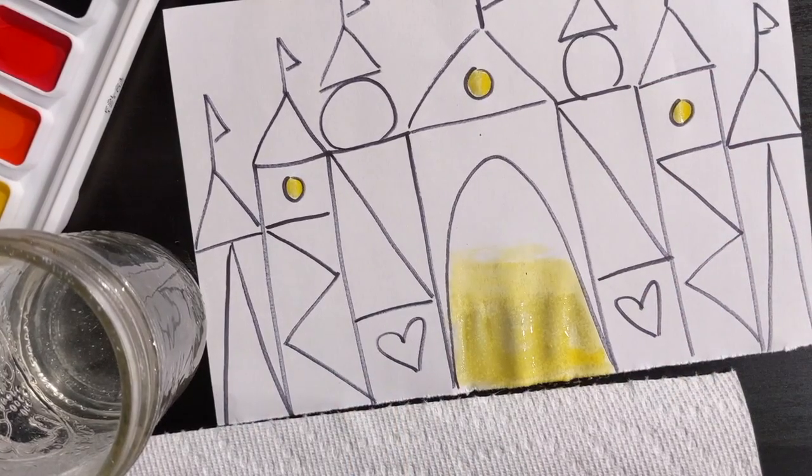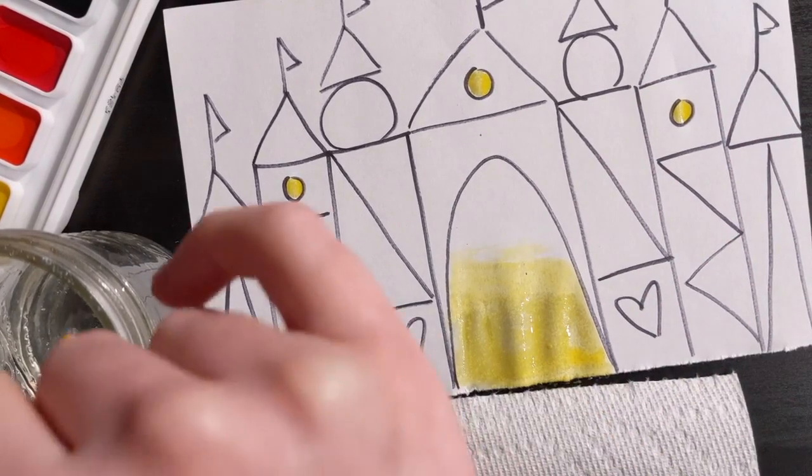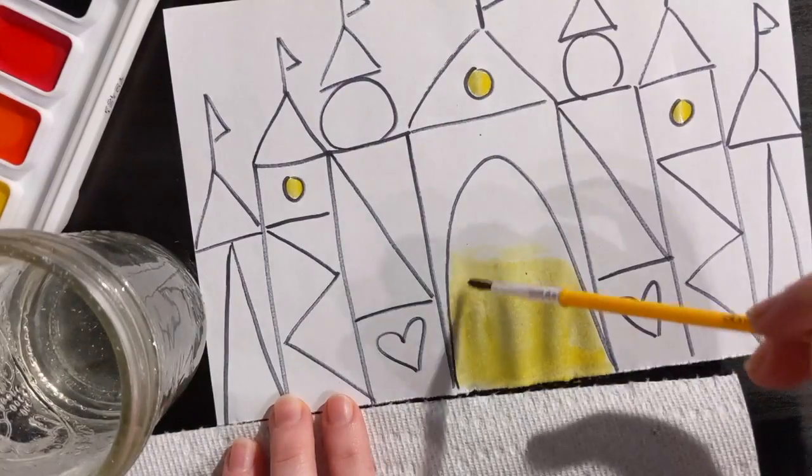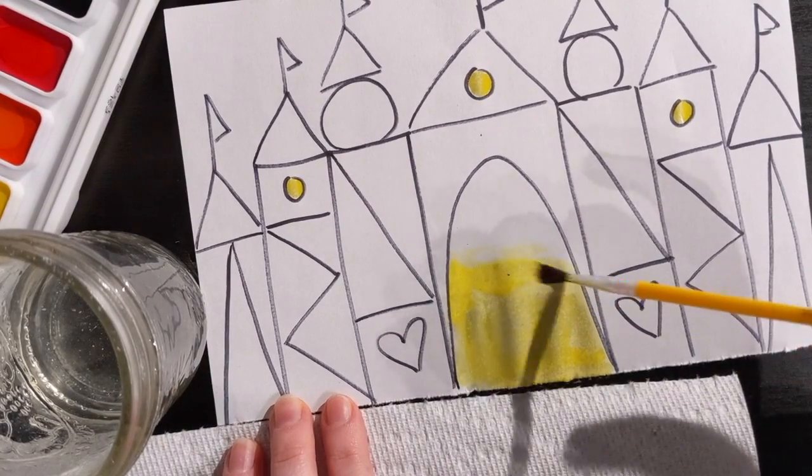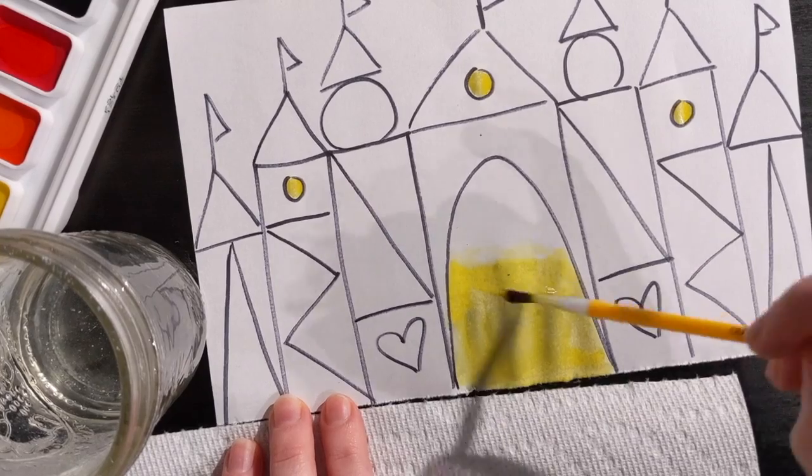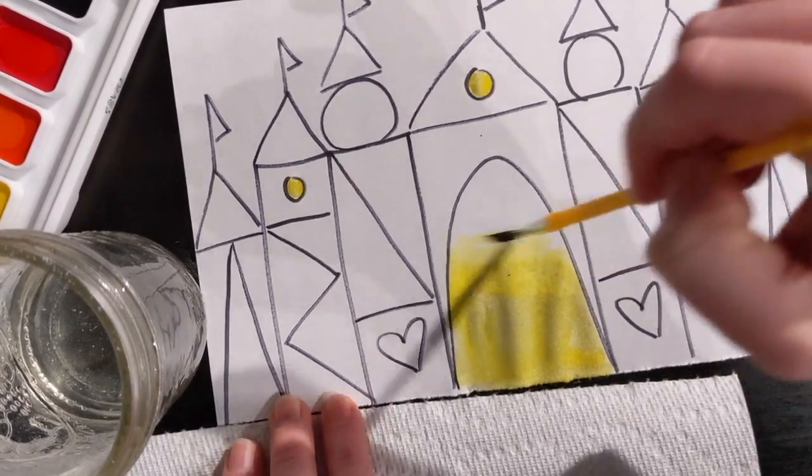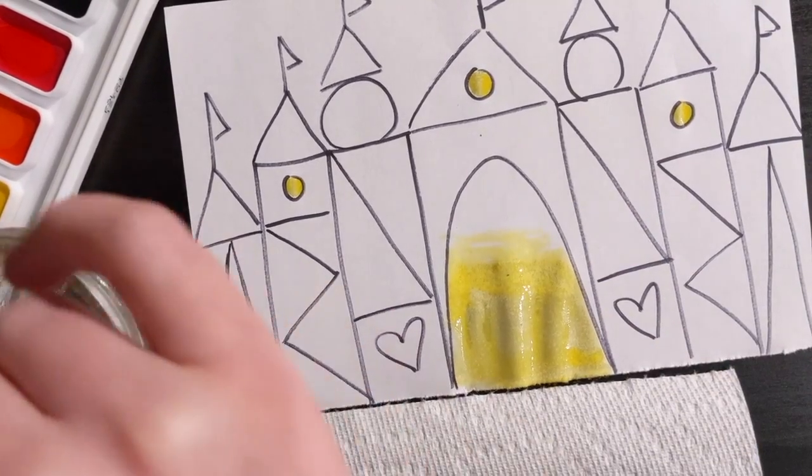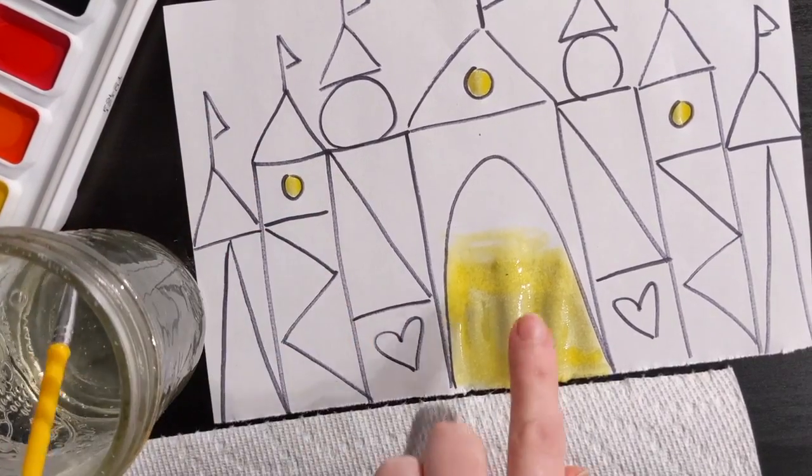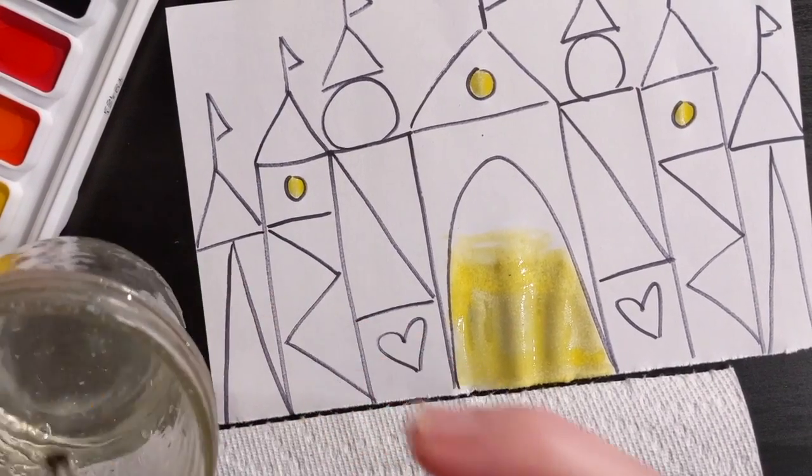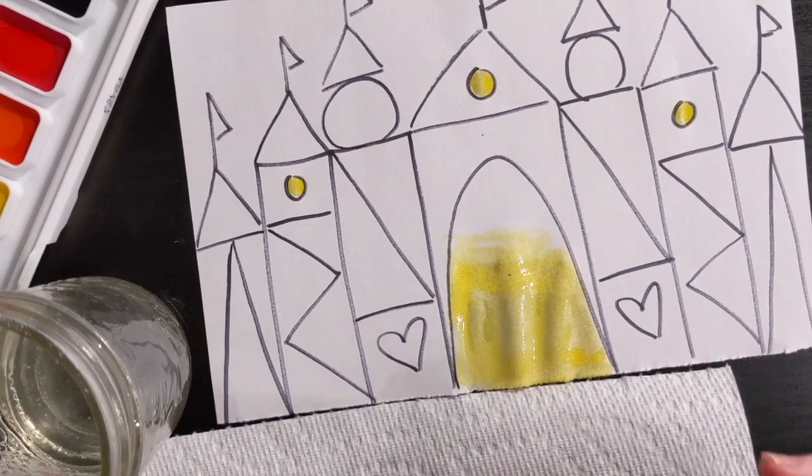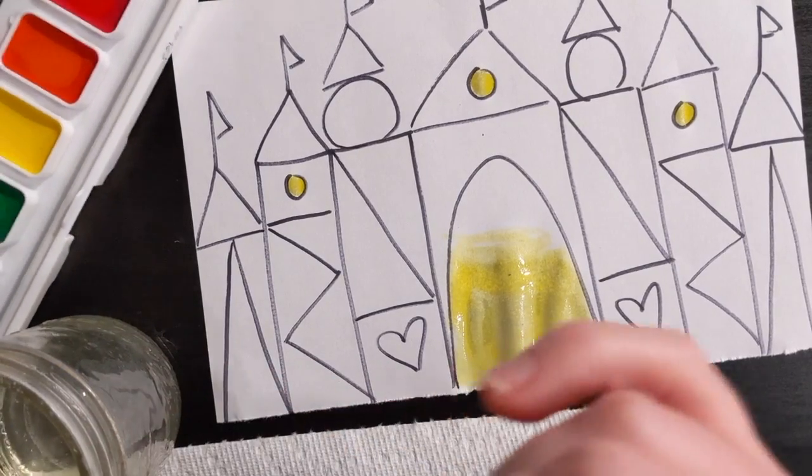Now for my door I'm gonna do something called blending. So I've added some yellow. I want to work kind of quickly because I don't want it to dry. I want to work kind of quickly, I don't want it to dry. So before my paint dries I'm going to clean up my brush, wipe it really quickly on my paper towel.